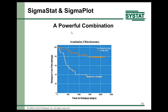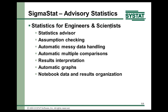Now SigmaStat. A powerful combination means using SigmaStat to determine survival curves and then Sigmaplot to create the presentation-quality output. SigmaStat is statistics for engineers and scientists — meaning it helps non-statisticians. The statistics advisor helps you select the right test if you don't know what to use. In the background it checks the assumptions for that test. It automatically handles missing values all the way up to entire missing cells in ANOVA. There's automatic multiple comparisons, results interpretation that can be pasted into reports, and automatic graphs for each test.